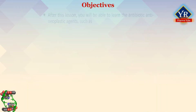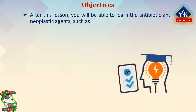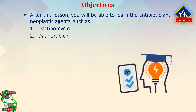After this lesson, you will be able to learn the antibiotic anti-cancer agents, their classification, chemistry, mechanism of action, and uses of dactinomycin, danorubicin, doxorubicin, and bleomycin.